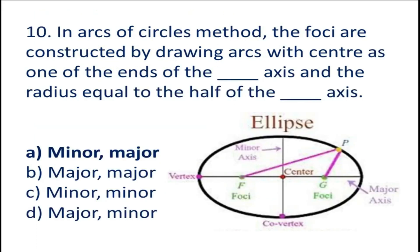Question number 10: In the arc of circle method, the foci are constructed by drawing arcs with center as one of the ends of the blank axis and the radius equal to half of the blank axis.